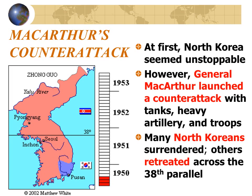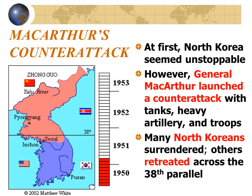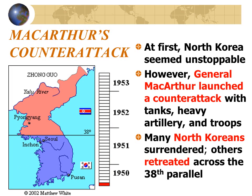At first, North Korea seemed unstoppable. However, General MacArthur launched a counterattack with tanks, heavy artillery, and troops landing at Incheon, just southwest of Seoul. Many North Koreans surrendered, and others retreated across the 38th parallel, but not before burning Seoul to the ground. As the United States pushed North Koreans closer to China, the U.S. burned down just as many cities and murdered just as many civilians, if not more, as the communists did in their retreat.